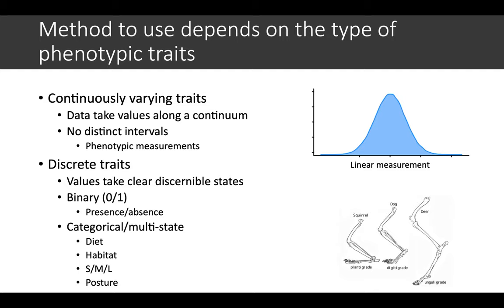The different types of tests and methods to use depends on the type of phenotypic traits. Continuous varying traits are a very common kind of data. The data take values along a continuum, so there's no real distinct intervals. These are usually things like phenotypic measurements like femur lengths or skull length or body mass.